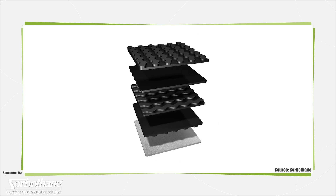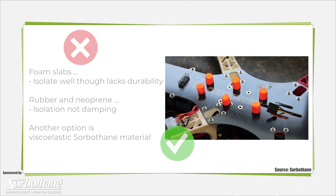Last, let's consider passive vibration mitigation in elastomeric material formats, which offer simplicity in format and application. Foam slabs isolate well enough though lack durability. Rubber and neoprene excel at isolation, but not damping.